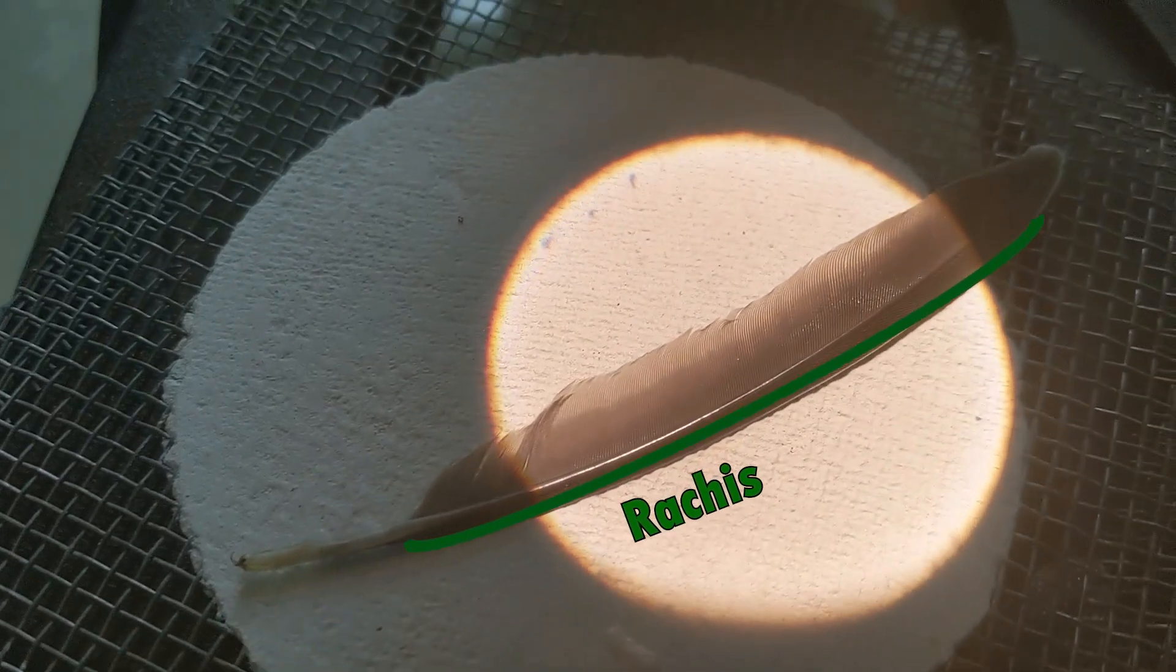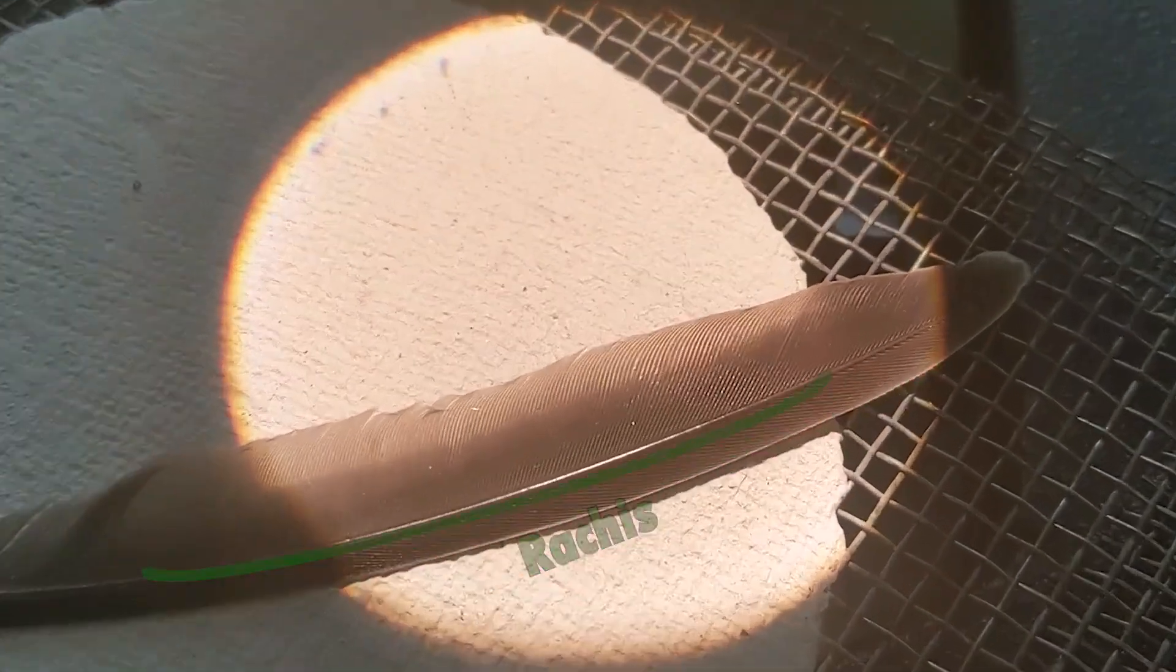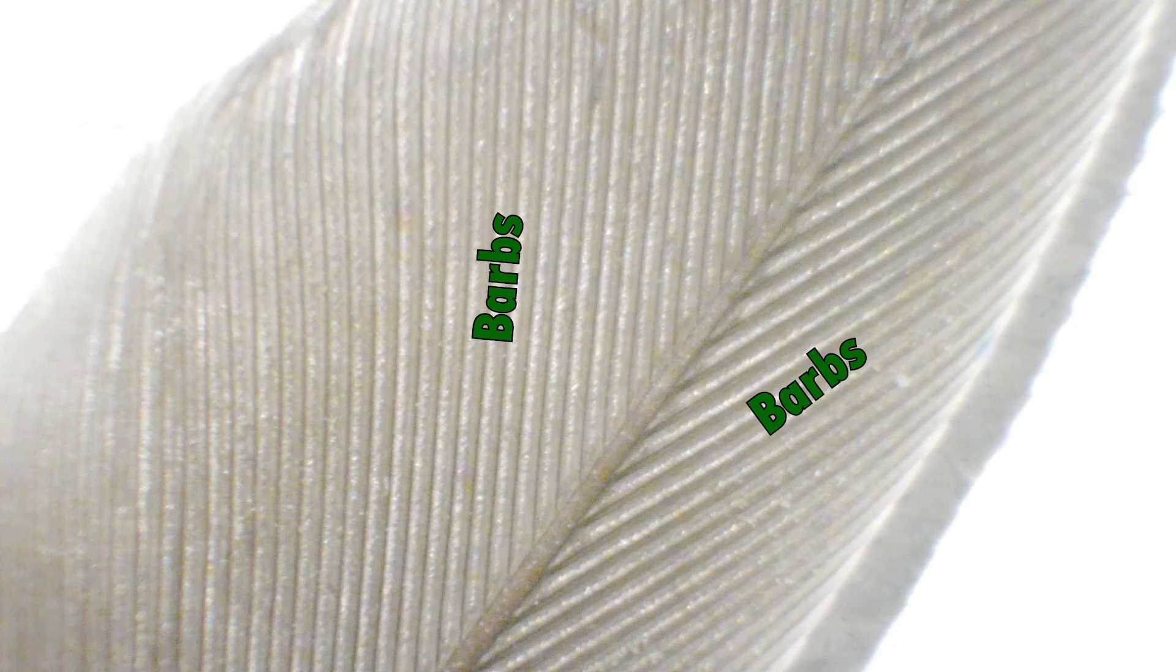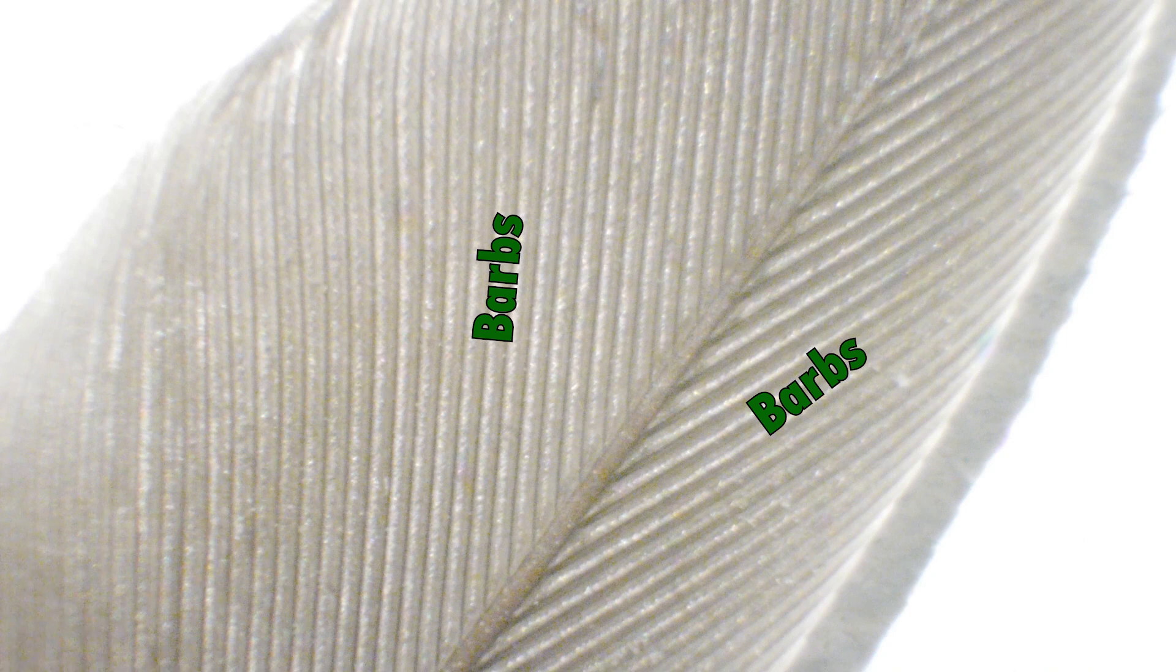That shaft through the middle is called a rachis. Now you can think of the rachis as the trunk of a tree, and there are branches coming off the rachis, like there are big branches coming off a tree, and these are called barbs. You can even see them without a microscope. If you drew a feather you'd probably draw the rachis and then the barbs.